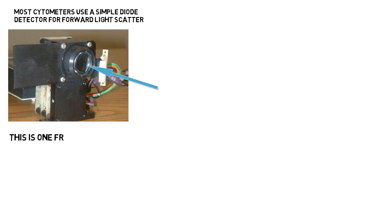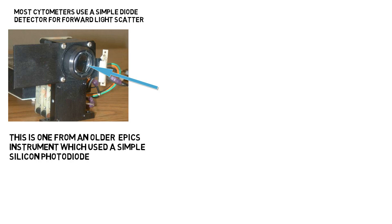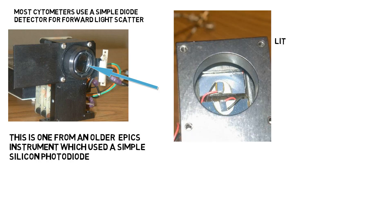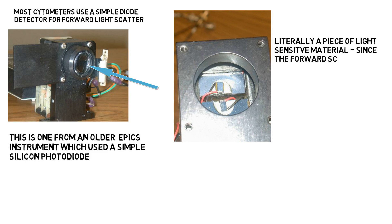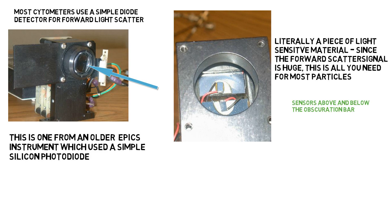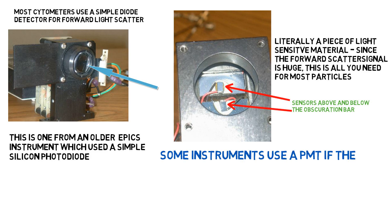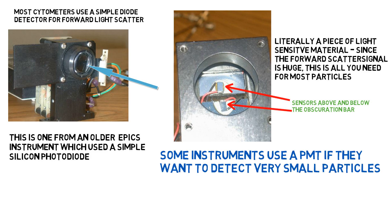Most flow cytometers use a simple diode detector for forward light scatter. This one is from an older EPICS instrument, which used a simple silicon photodiode — literally a piece of light-sensitive material. Since the forward scatter signal is huge, this is all you need for most particles. You can see the sensors above and below the obscuration bar. Some instruments do use PMTs if they want to detect very small particles.